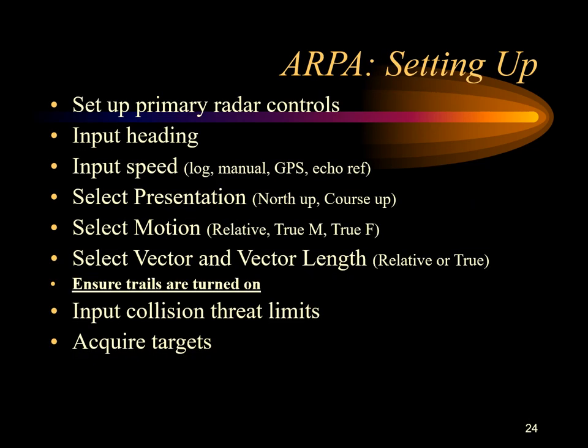For ARPA setting up procedures, first set up the primary radar controls: the on/standby switch, brilliance switch, gain switch, tuning switch, and sea and rain clutter switches. Input the heading into the ARPA — sometimes it is automatically input through the gyro, but make sure the input is there. Input the speed, whether log speed, manually operated, or GPS speed feeding into it.